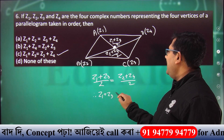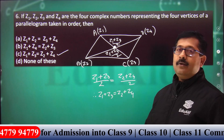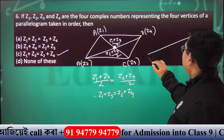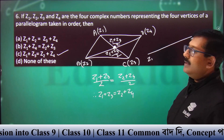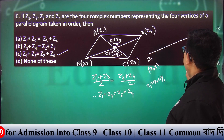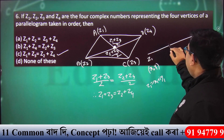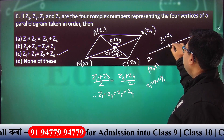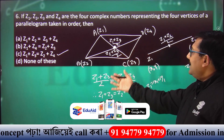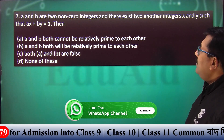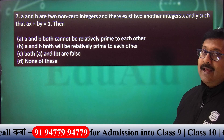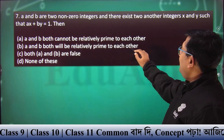So here we have Z1 plus Z3 equals Z2 plus Z4. The midpoint of the line segment joining Z1 and Z2 — here x1, y1 coordinates. Z1 equals x1 plus iy1, Z2 equals x2 plus iy2, midpoint is Z1 plus Z2 by 2. A condition to satisfy: A and B both must be relatively prime to each other.